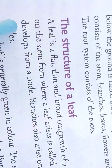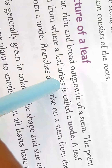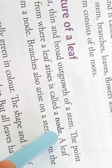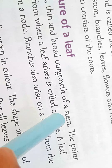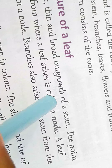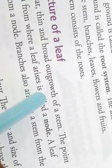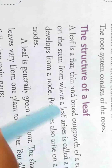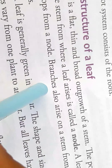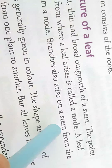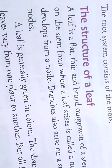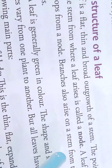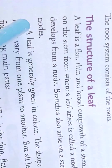The point on the stem from where a leaf rises is called a node. A node is a particular position from where the leaf arises. A leaf develops from a node. Branches also arise on a stem from the nodes — so not only leaves, but branches also arise from nodes on the stem.